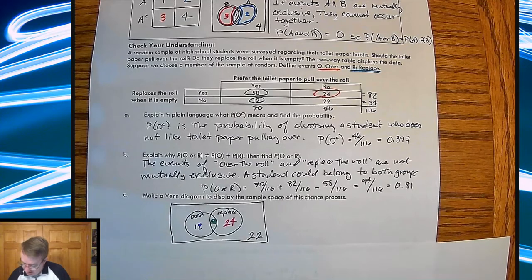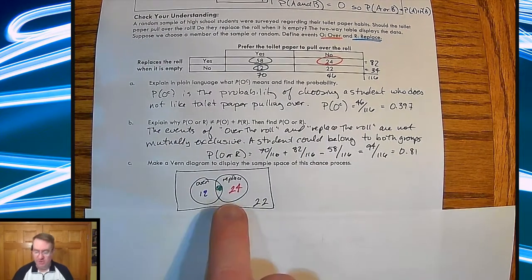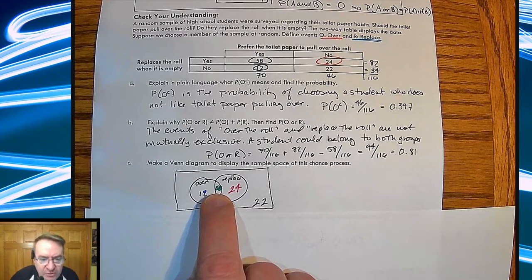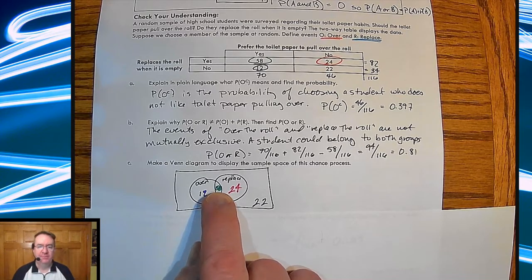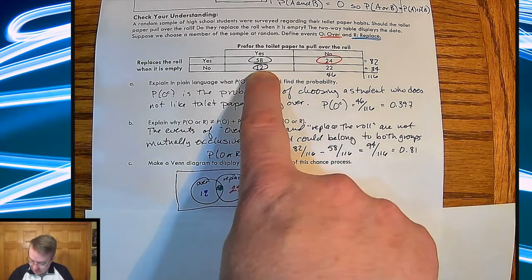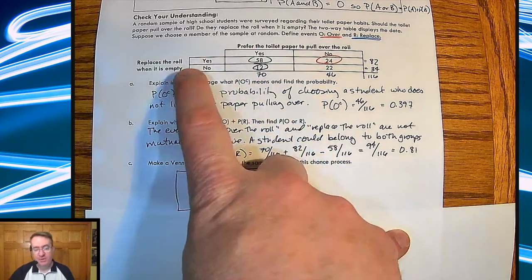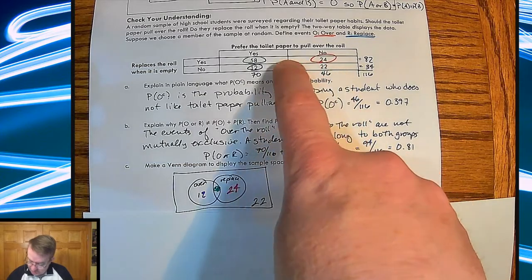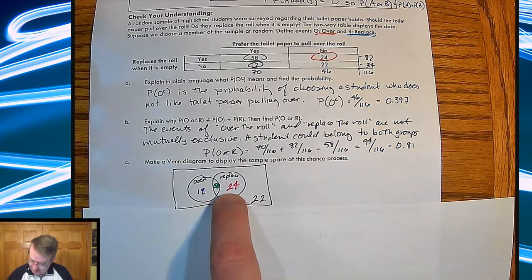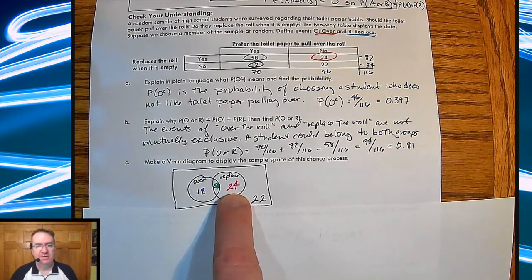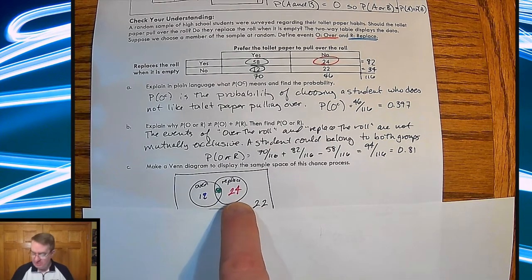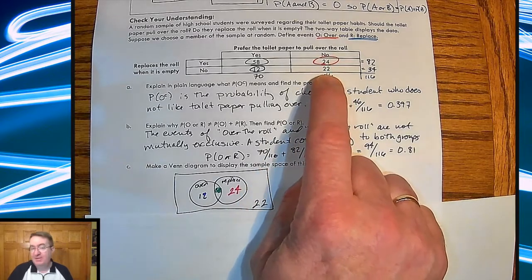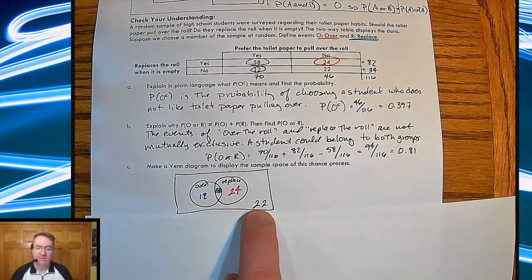And then the last one, make a Venn diagram of this. So, we've got our overs. We have our replacements. So, 58, which I know looks like it's kind of hard to read. My apologies. The overlap is in the middle. We have these 12 people who are on the toilet paper over, but they don't replace it. And then you've got people like my oldest who, actually, people like my oldest are here. No, he's gotten better. He's probably over here. He replaces it, but he likes it always under. So, there's 24. Man, he's just tossing them under the bus. I know. And then everybody who doesn't like it over and doesn't replace it is 22.